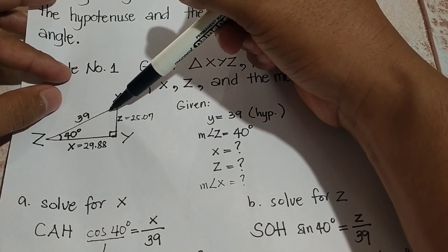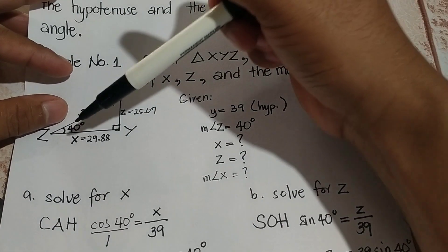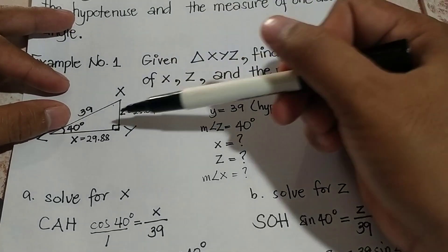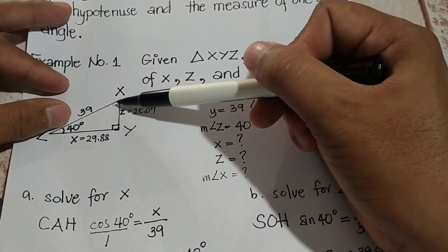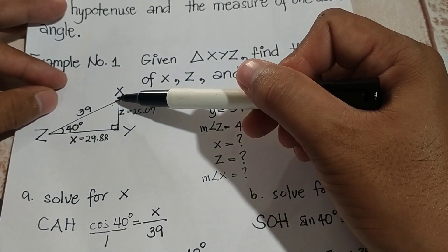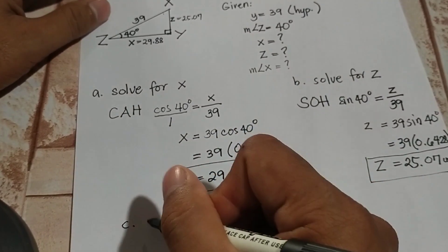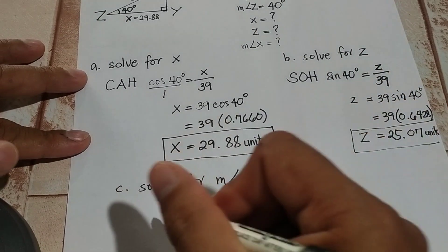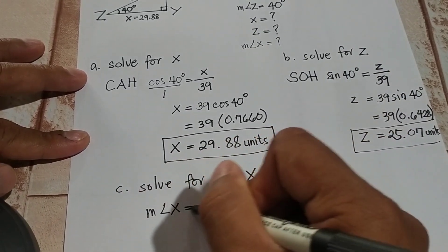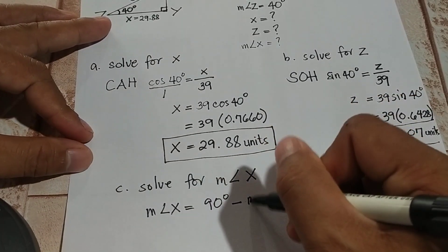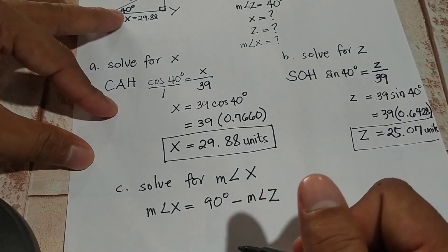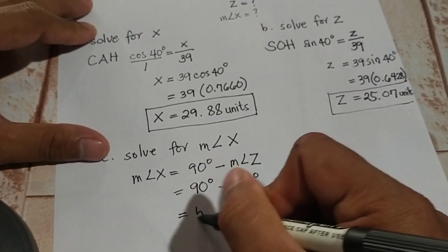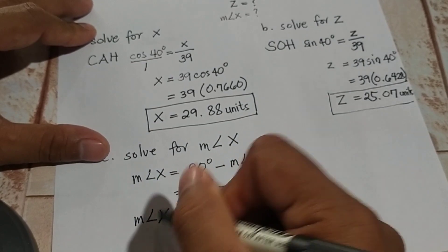Now let's find the measure of angle X. Remember that the sum of all angles in a triangle is 180 degrees. Since we already have 90 degrees and 40 degrees, angle Z and angle X are complementary angles. So the measure of angle X equals 90 degrees minus the measure of angle Z. That is 90 minus 40, which gives us 50 degrees.